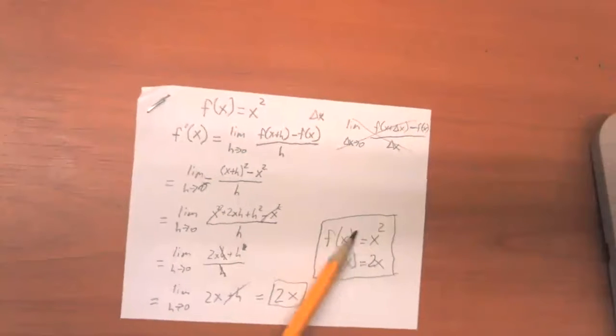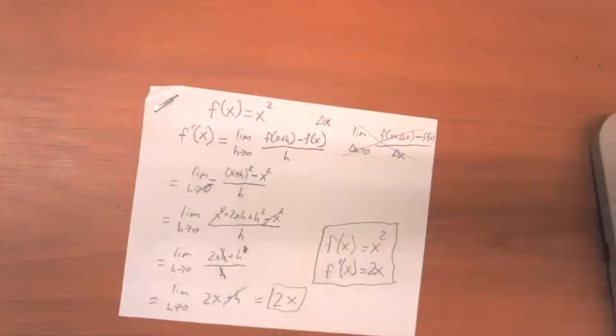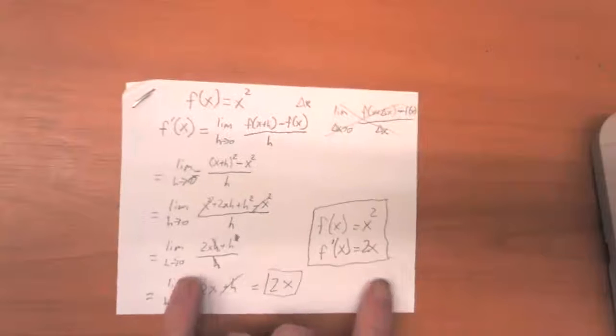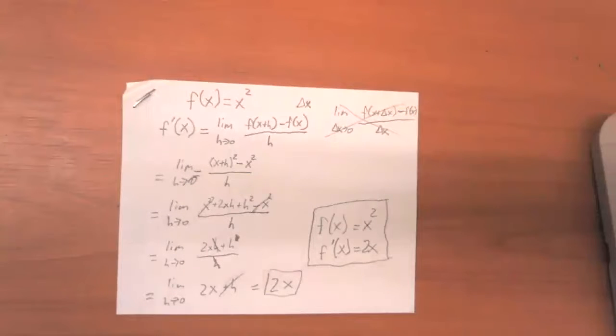And now we don't need to do any work at all to figure out that it's just 2 times whatever the input value is. That's only true for this function, obviously. Different functions are going to have different derivatives. But this is starting to make this process a little bit simpler to understand. And we'll look at some more examples of this in later videos.